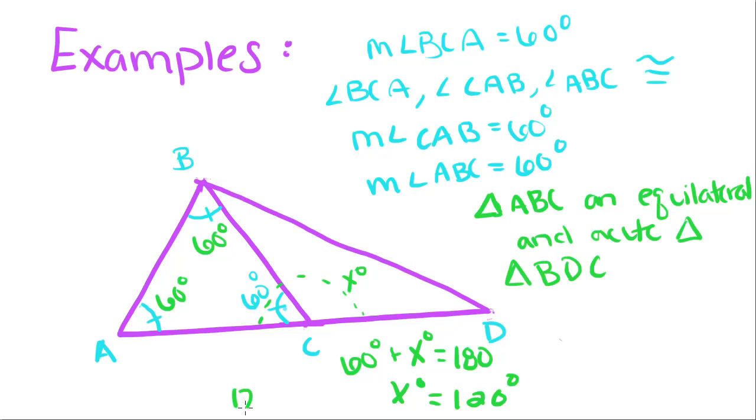And since 120 is greater than 90 but less than 180, we know that this is an obtuse angle. So, that makes triangle BDC an obtuse triangle.